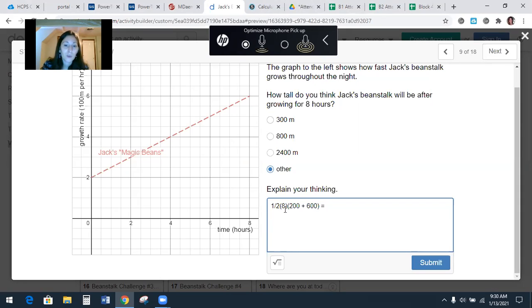So half of eight would be four. 200 plus 600 would be 800. So we have four times 800, which is going to be 3,200. And again, it's going to be meters because we did hours times meters per hour. The hours cancel. It's going to be 3,200 meters.